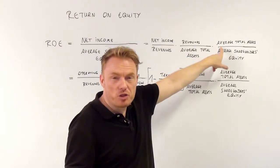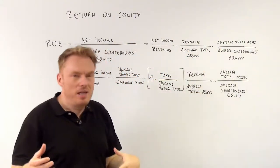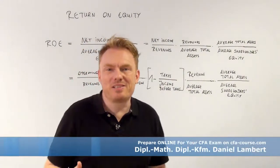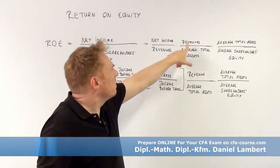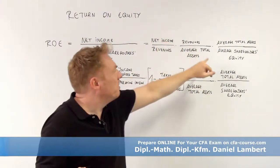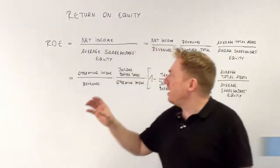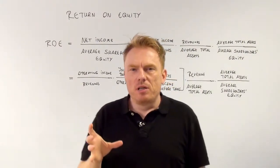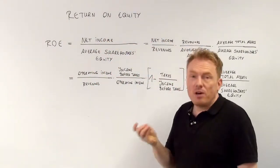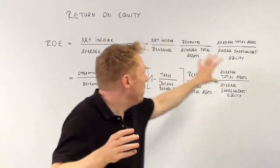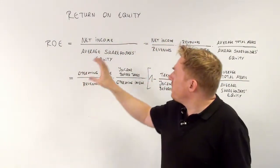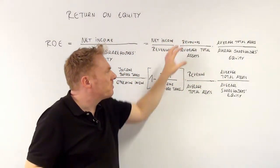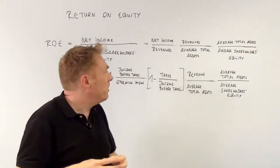First you expand by revenues, second you expand by average total assets. If you re-cancel revenues and average total assets, you just get net income divided by average shareholders' equity, which is the first way of computing return on equity. So this second way is totally the same as the first way.